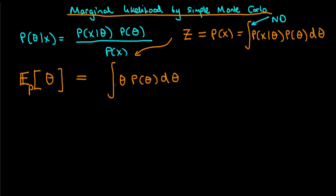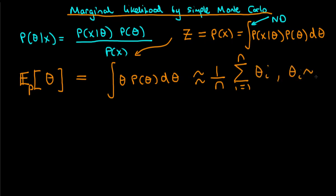Let's now imagine that theta is actually a vector. Does anything change? Well, no, except that we're now doing an n-dimensional integral and that becomes quite a lot harder. But we know a way to approximate n-dimensional integrals if we can use sampling. The idea is that we can approximate this by 1 over n, where n is the sample size, times the sum from i equals 1 to n of theta i, where theta i is sampled from our density P of theta. In other words, we replace the population mean of theta with its sample equivalent. This kind of replacing integrals with sums is what underlies the whole concept of Markov chain Monte Carlo, or Monte Carlo in general.